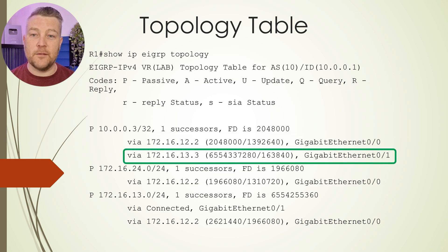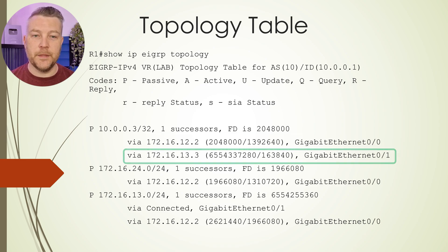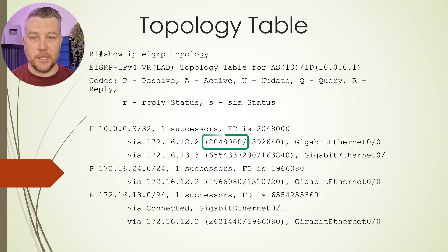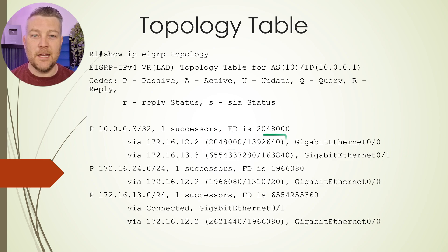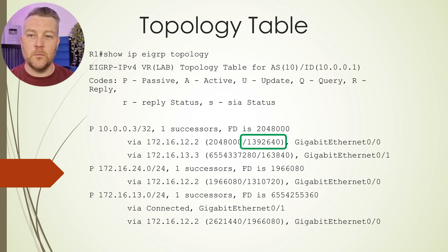Here we have the feasible successor. You'll see this part here, which is the path metric. And over here we have the reported distance.